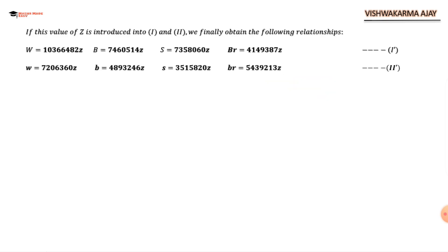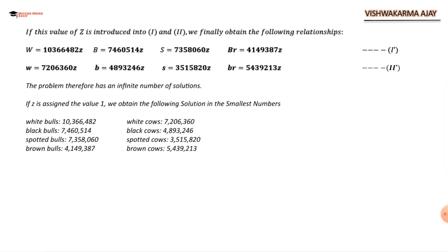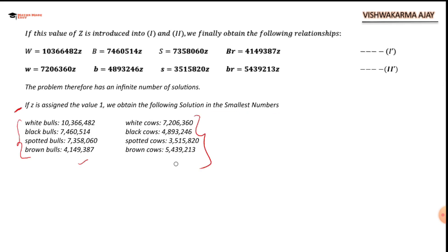The result is: W = 10,366,482 × small z, and similarly for B, S, Br, w, b, s, and br. This kind of equation has infinite solutions. If you put z = 1 you get the lowest possible values, and you can go up to any integer. Substituting z = 1 gives the smallest composition of the herd, and these are the final numbers.